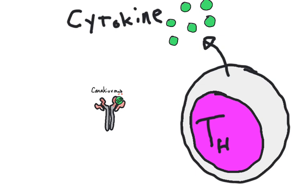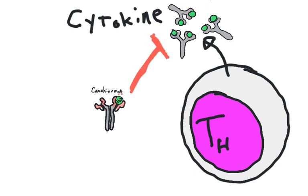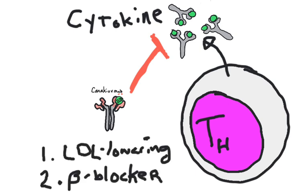By inhibiting one specific interleukin, this antibody can reduce inflammation. And when administered to patients who are already taking two drugs to treat coronary artery disease, it helped reduce their risk of death from heart failure.